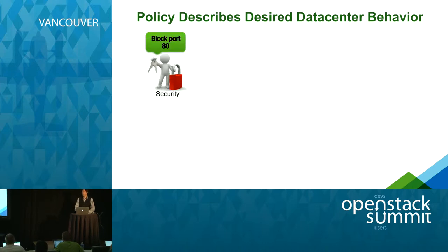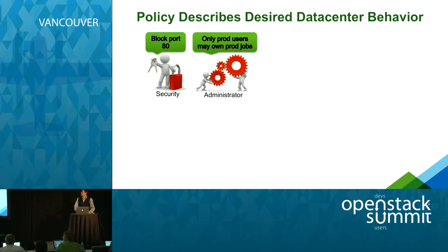For example, the security team might say they want to make sure that all VMs accessible by the internet have port 80 blocked — no access or connections through port 80, maybe because they have SSL policies in place. The administrators may have a different policy; they might say they only want prod users to be able to own prod jobs, so there are no mistakes about what's running as prod or dev in case someone wants to delete a job.